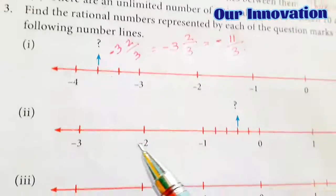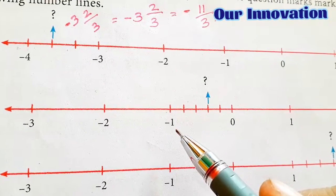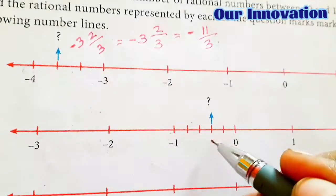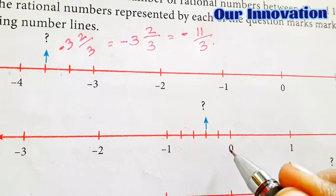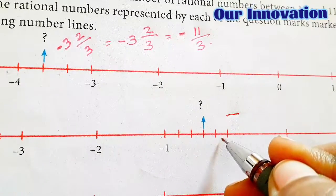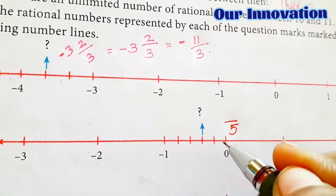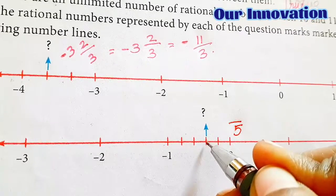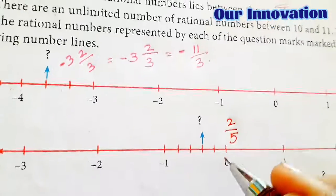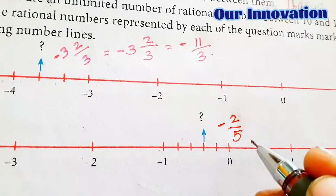So these are the rational numbers marked. Next, looking at the question mark between 0 and minus 1 — between 0 and minus 1, there are 5 divisions: 1, 2, 3, 4, 5. So the denominator is 5. The mark falls at minus 2 by 5.